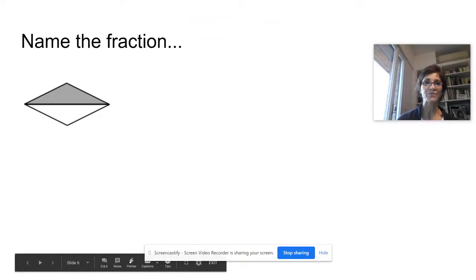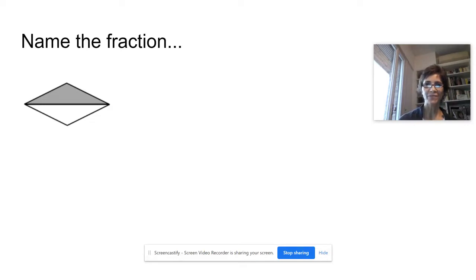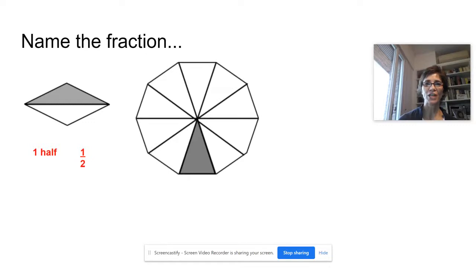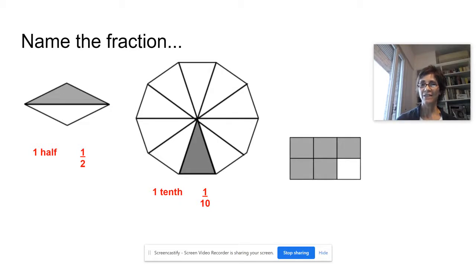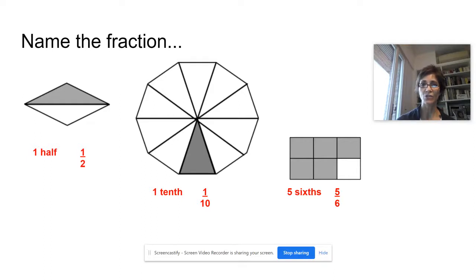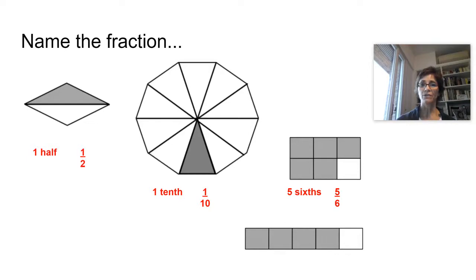Let's play a game — name the fraction. Look at this shape. What fraction is shaded? One half. Look at this shape. What's the fraction shaded? Think, how many parts did I divide the whole into? That's the fractional unit. How many parts are shaded? That's the fraction. And I have a unit fraction because the numerator is one. One tenth. Again, what fraction is shaded? There are six parts, so that's the denominator, and five are shaded — so five sixths. Remember, the denominator shows how many parts I divided the whole into. The numerator shows how many I'm considering. And the last one — I have five parts and four of those are shaded. So four fifths.